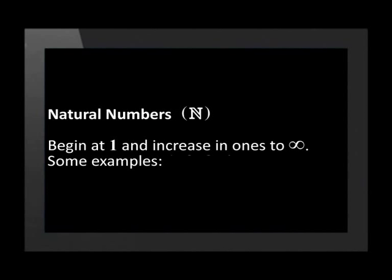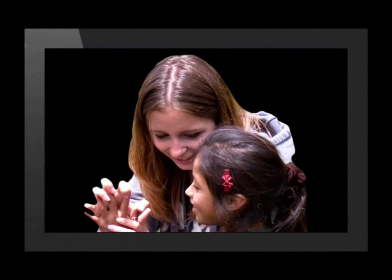Let's start by looking at rational numbers, starting at the innermost circle of the diagram with natural numbers and discussing each number type as we move out. Natural numbers are often referred to as counting numbers. They begin at one and increase in ones to infinity. Some examples are one, two, three, and four. An easy way to remember is to think about a little child — if you ask them to count naturally, they start at one and count up in ones.